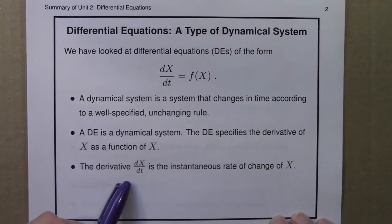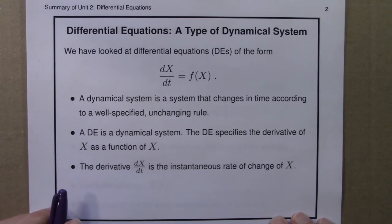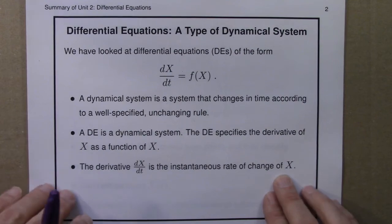And the derivative, which if you haven't had calculus might be a new term, is just the instantaneous rate of change of x. It's how fast x is changing at a particular moment or instant in time.